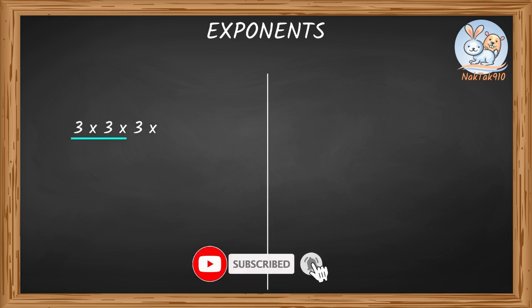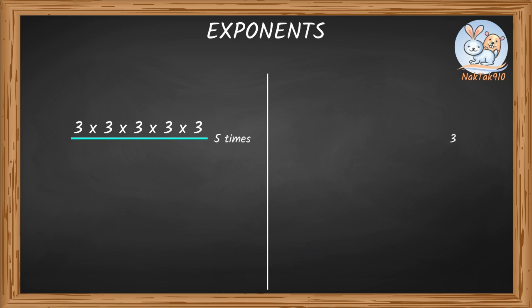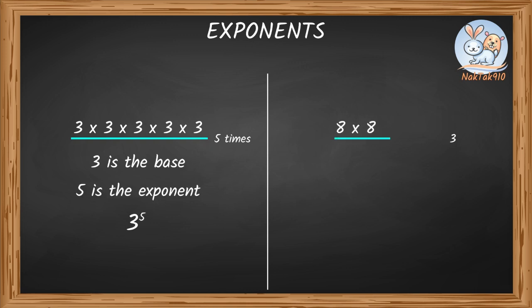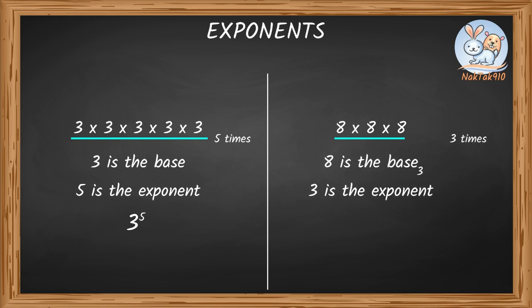3 times 3 times 3 times 3 times 3 times 3 — because 3 is multiplied 5 times, wait — actually: 3 is the base and 5 is the exponent, giving 3 to the power of 5. Since 8 is multiplied 3 times, 8 is the base and 3 is the exponent — 8 to the power of 3. Math is easy and fun when you understand your concepts with a little bit of practice and loads of fun!